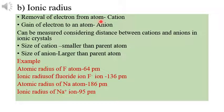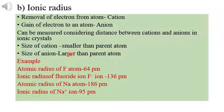What happens to the size compared to the parent atom? In the case of a cation, when an electron is removed, the number of electrons decreases while the number of protons remains the same. The nuclear attraction is therefore greater, so the size of the cation decreases. In the case of an anion, one more electron arrives, the nuclear attraction is less, and the size of the anion is larger compared to the parent atom.